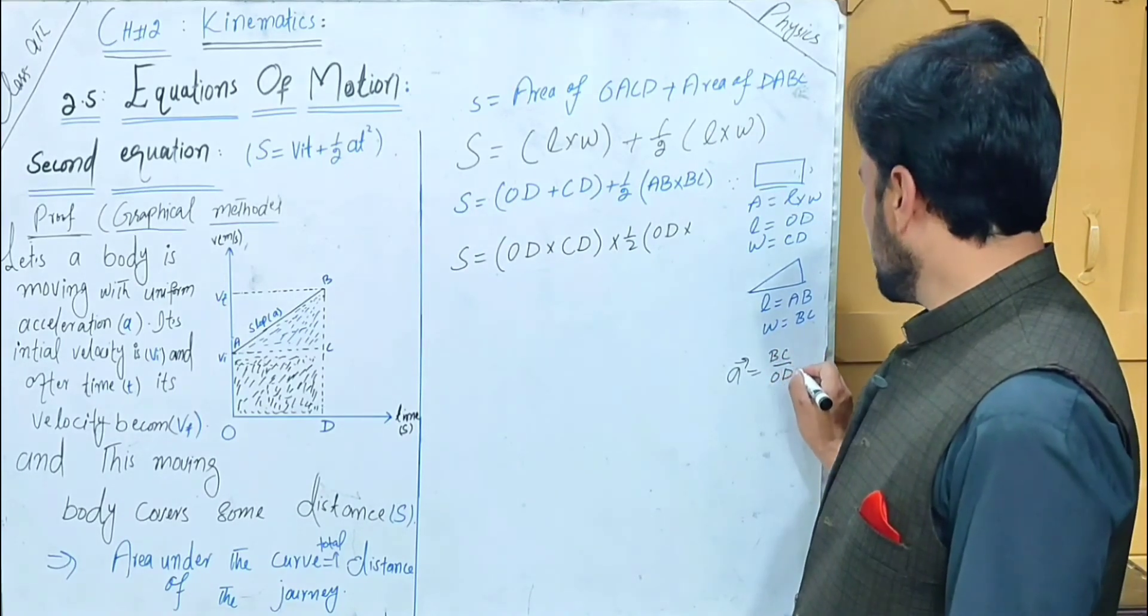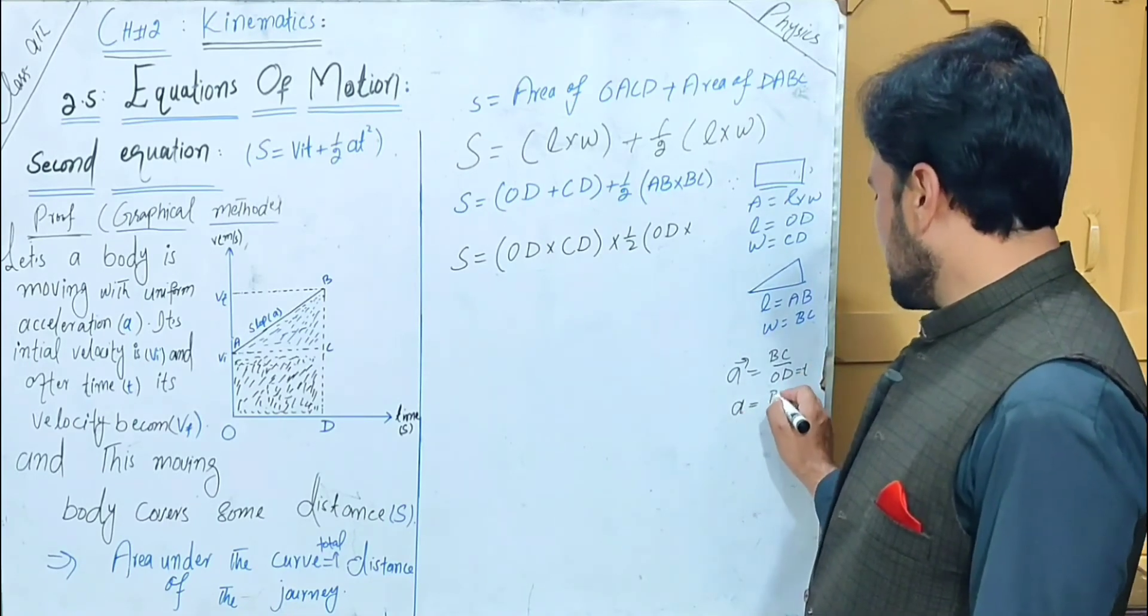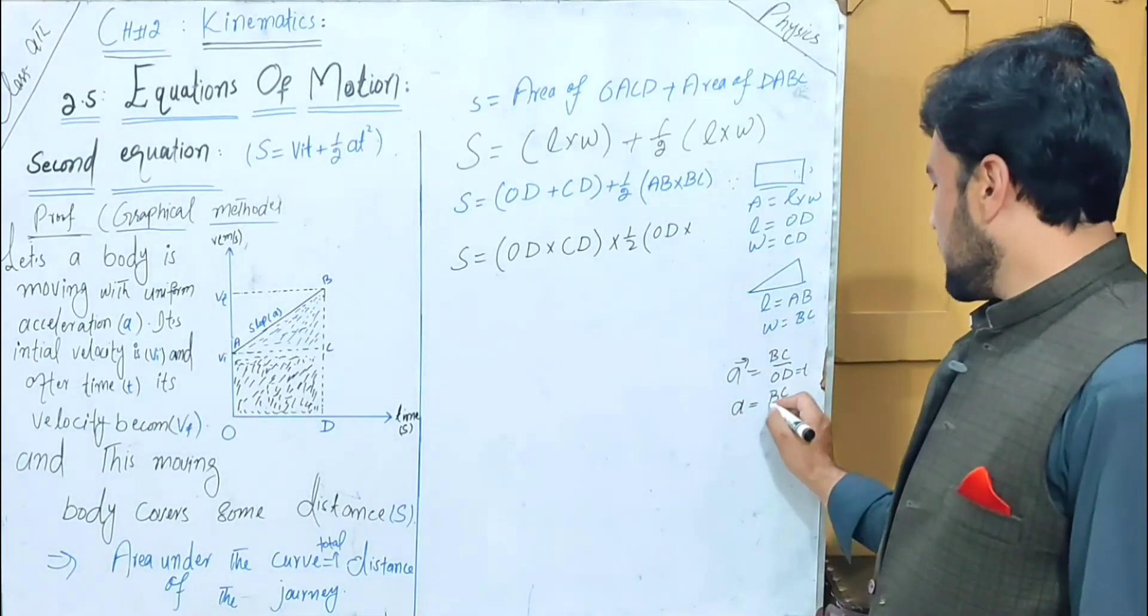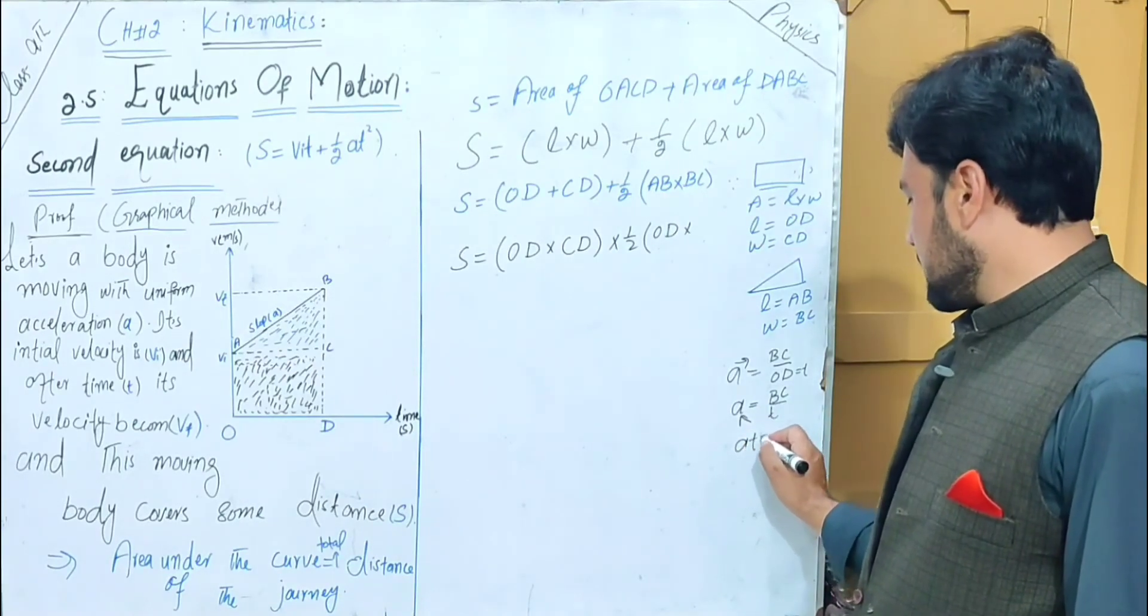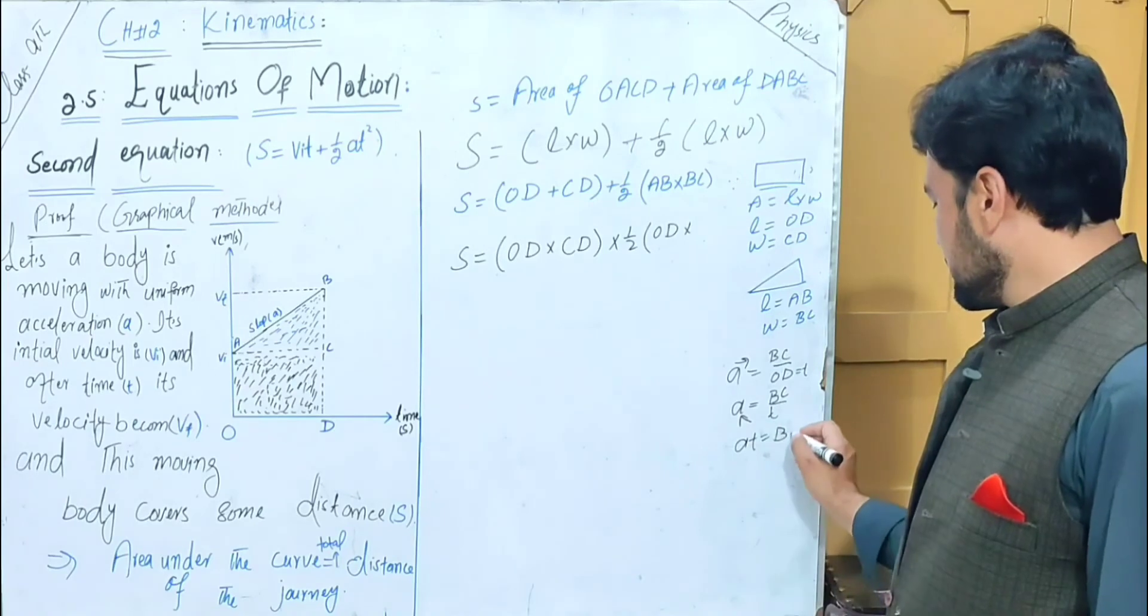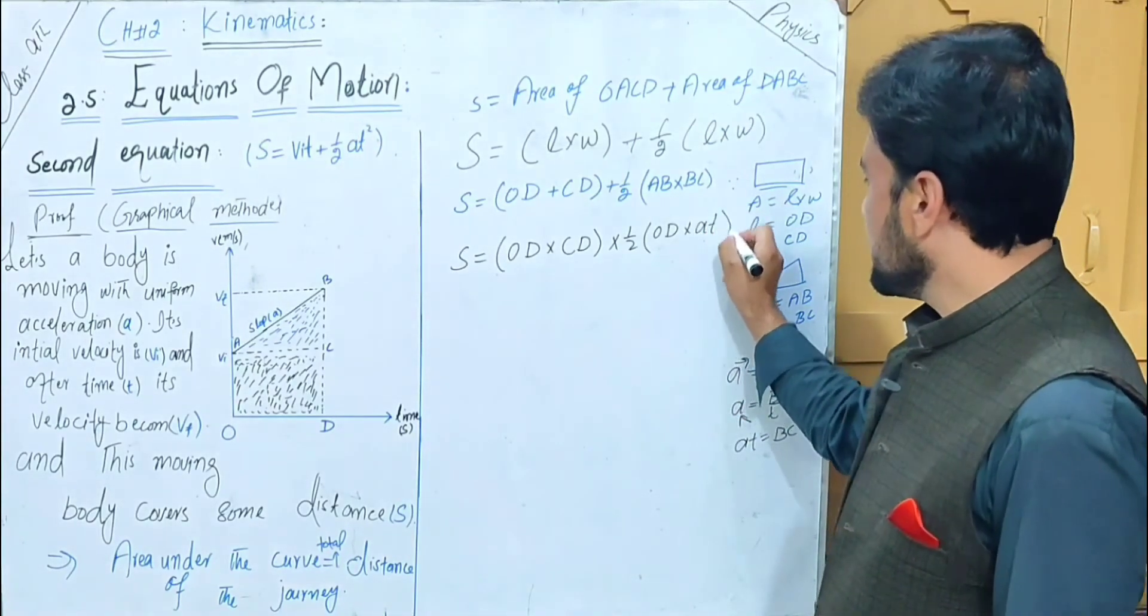AB equals OD. For BC, the slope gives the acceleration a, and a equals BC divided by OD. OD equals t, so a equals BC divided by t. Therefore BC equals at.